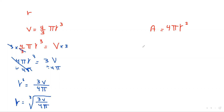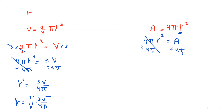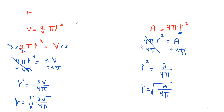Now for the area of a sphere: A equals 4pi r squared, and we want to make r the subject. Switch sides: 4pi r squared equals A. Divide both sides by 4pi — cancel, giving r squared equals A over 4pi. Take the square root, so r equals the square root of A over 4pi.